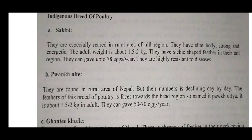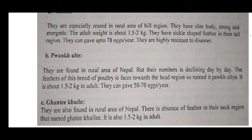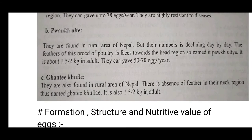The second indigenous breed is Pak Ulte. They are found in rural areas of Nepal, but their number is declining day by day. The feathers of this breed face towards the head region, hence named Pak Ulte. It lays about 50 to 70 eggs per year.